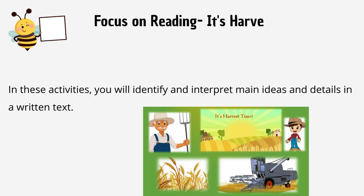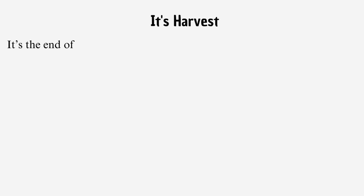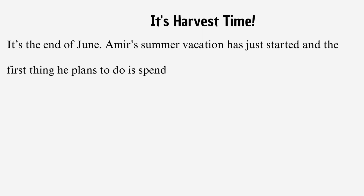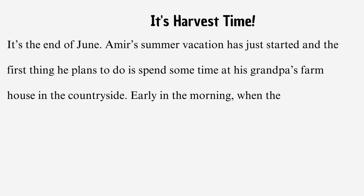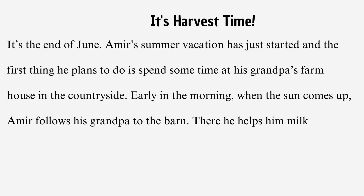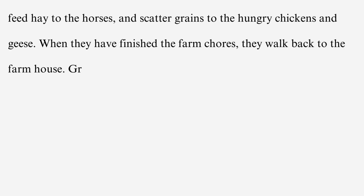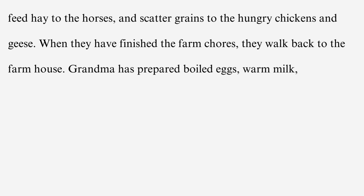Focus on reading: It's Harvest Time. It's the end of June. Amir's summer vacation has just started and the first thing he plans to do is spend some time at his grandpa's farmhouse in the countryside. Early in the morning, when the sun comes up, Amir follows his grandpa to the barn. There he helps him milk the cows, feed hay to the horses, and scatter grains to the hungry chickens and geese. When they have finished the farm chores, they walk back to the farmhouse. Grandma has prepared boiled eggs, warm milk, and fresh bread for breakfast.